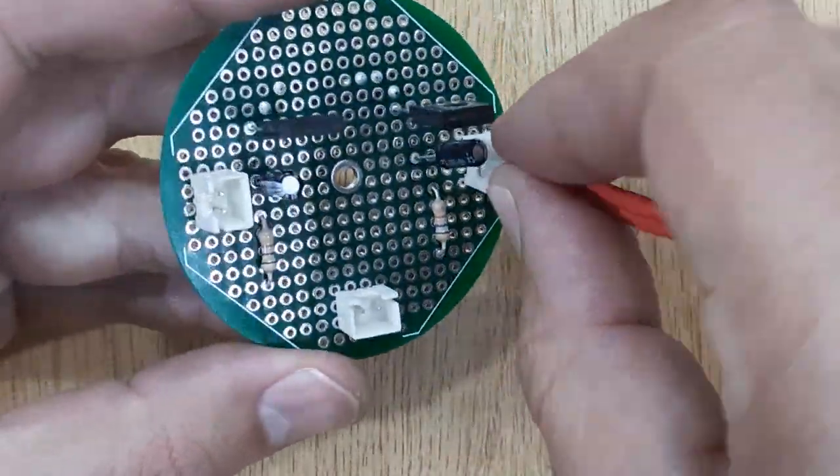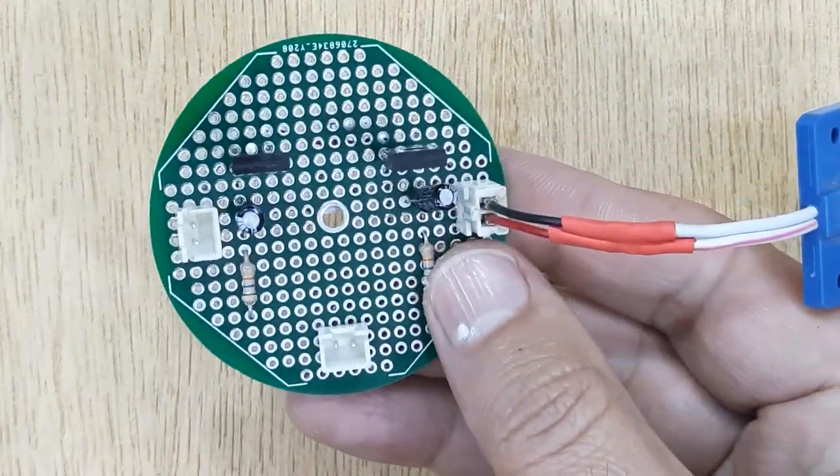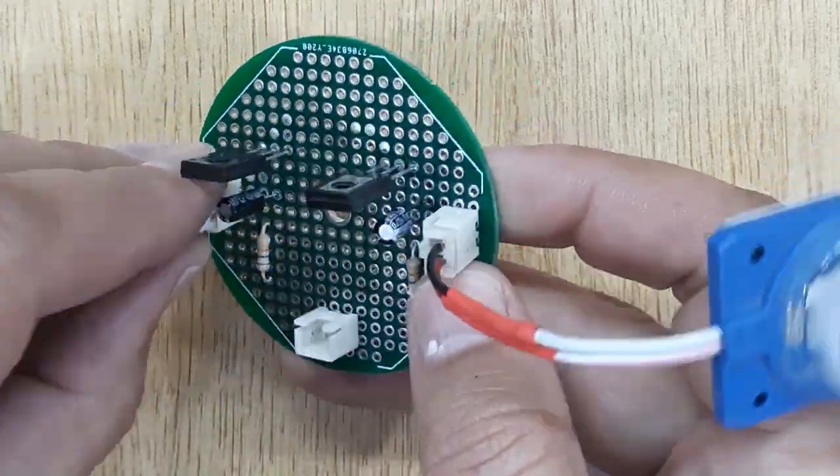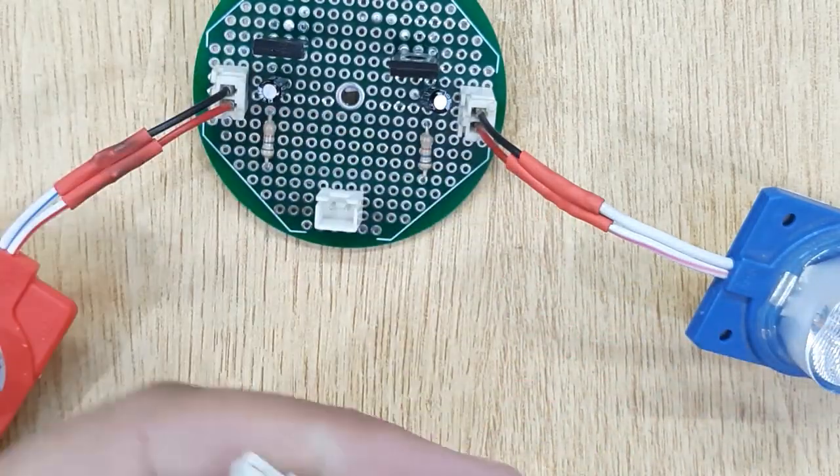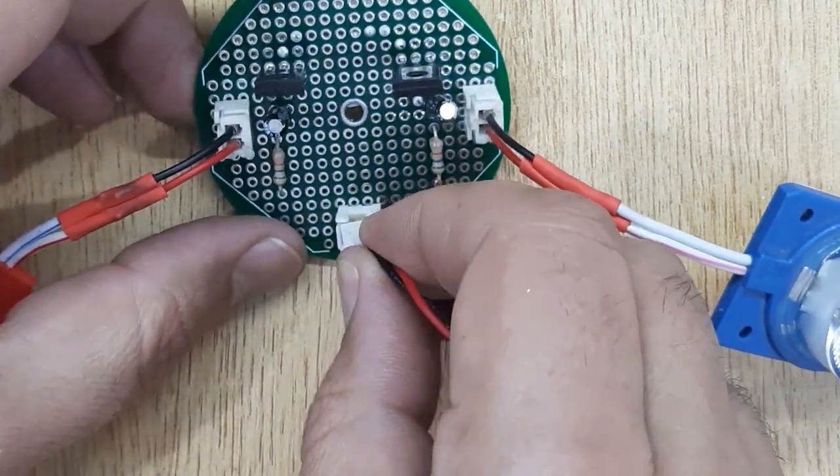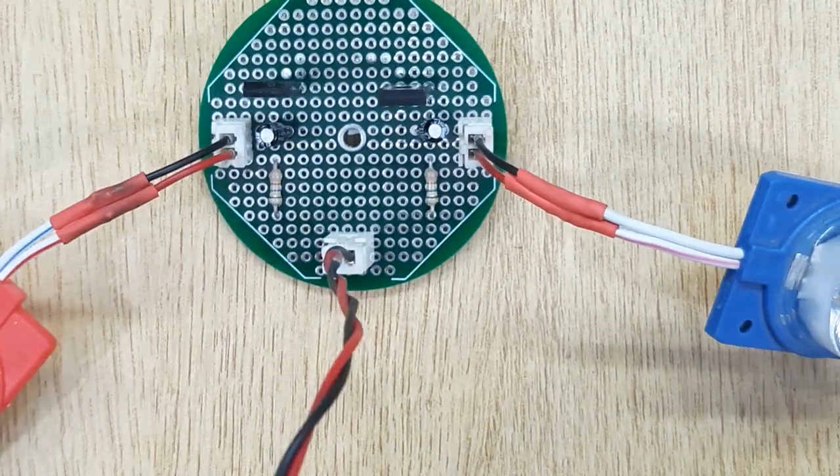And at last, connect 12 volt LEDs with the PCB. Now your 12 volt LED flasher is ready. Let's test it by connecting 12 volt DC power.